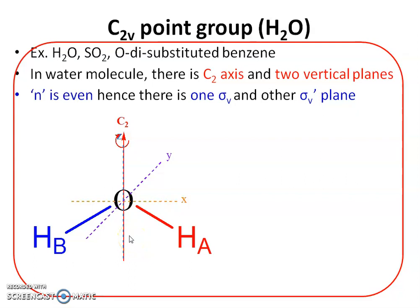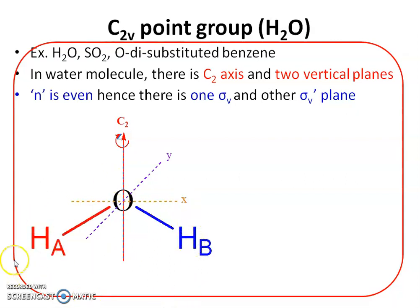After the C2¹ operation, HA and HB exchange positions. After the C2² operation, HA returns to its original position and HB returns to its initial position — this is the identity operation, since the resulting structure is identical to the initial structure. This confirms the C2 axis.